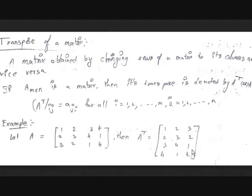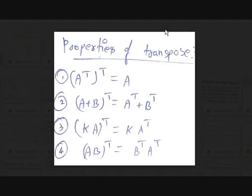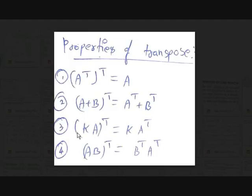Now let's see the properties of transpose. There are four properties. First, (A-transpose)-transpose equals A — if you take a matrix, find its transpose, then find the transpose of that result, you get back the same matrix. Second, (A + B)-transpose equals A-transpose plus B-transpose — adding two matrices and transposing gives the same result as transposing each and then adding. Third, (KA)-transpose equals K times A-transpose, where K is a scalar.